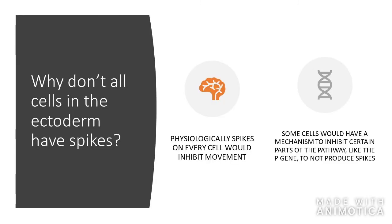So why don't all cells in the ectoderm have spikes? Physiologically, spikes on every cell would inhibit their movement, so some cells would have a mechanism to inhibit certain parts of the pathway, like the P gene, to produce smooth cells as opposed to spiky cells.